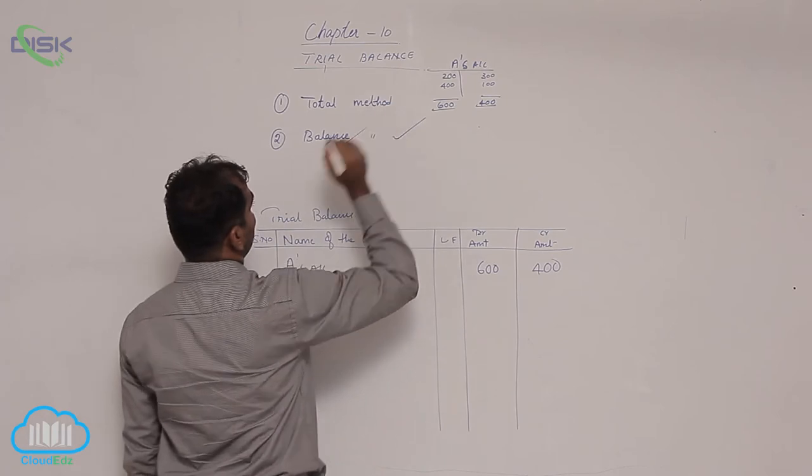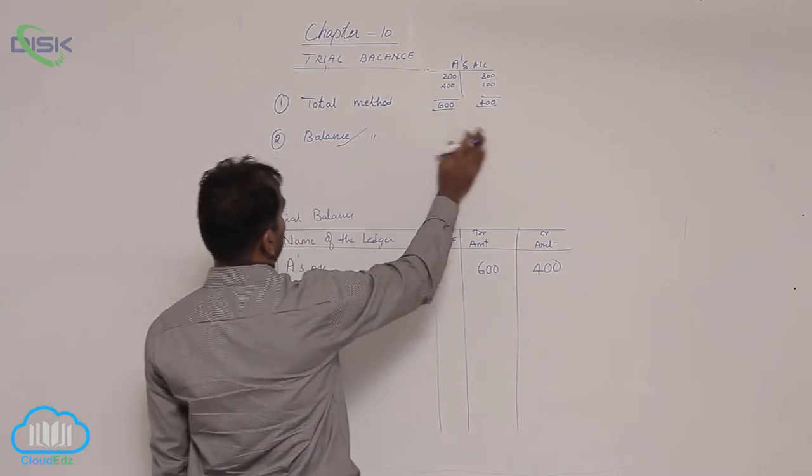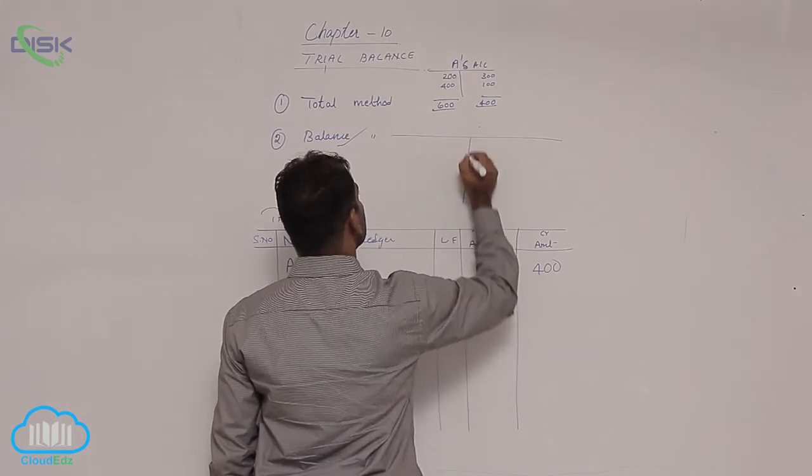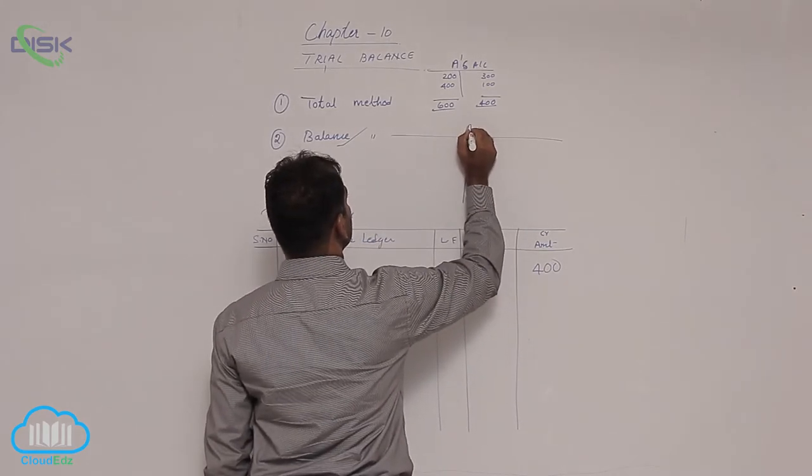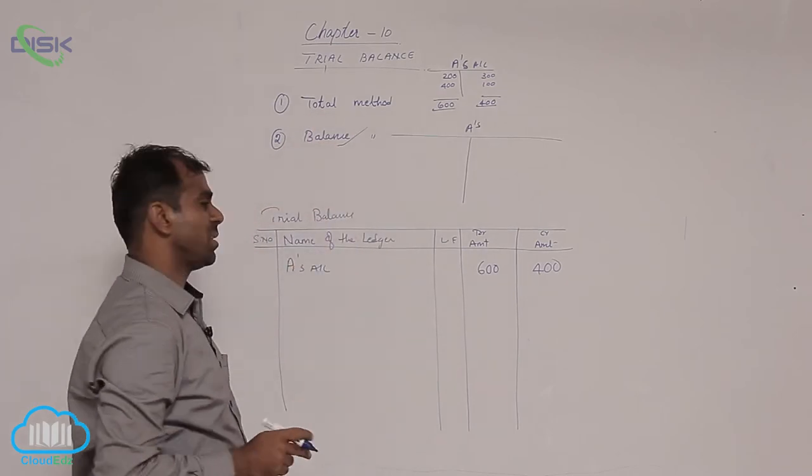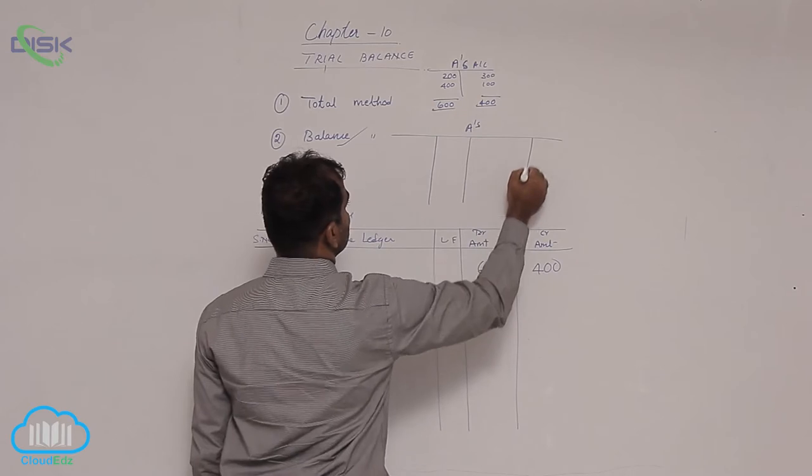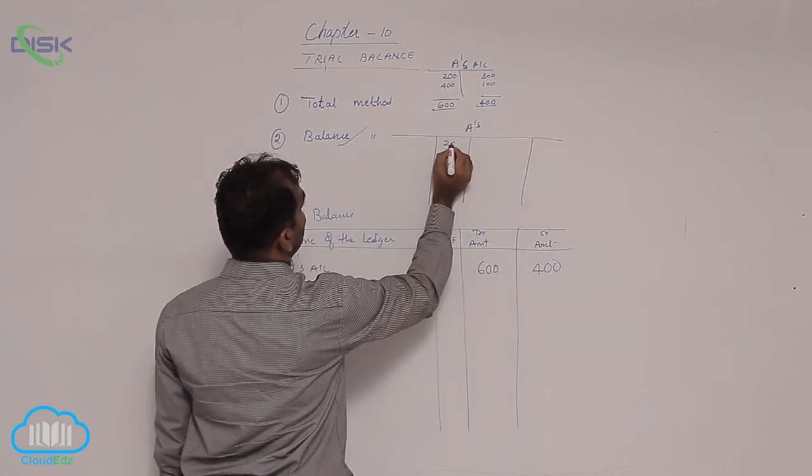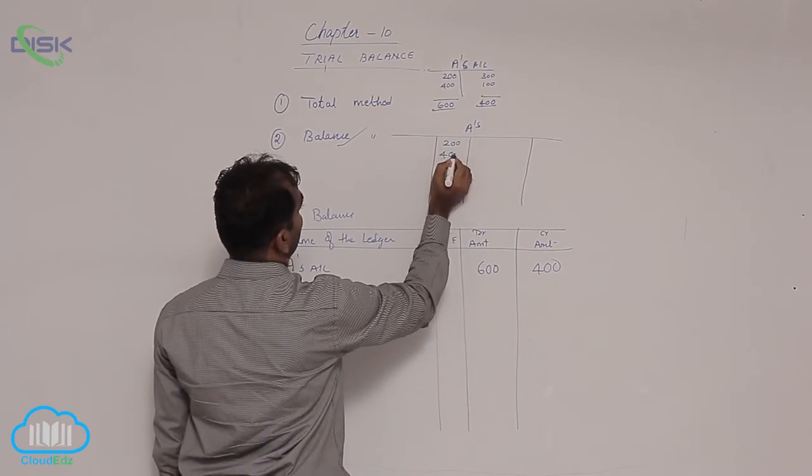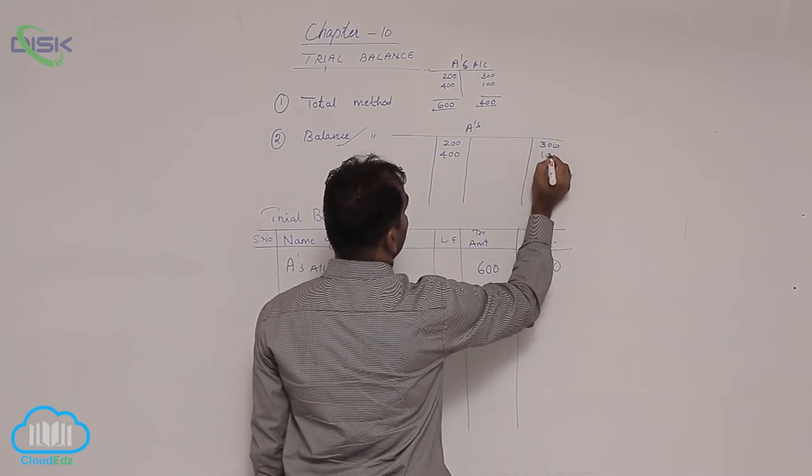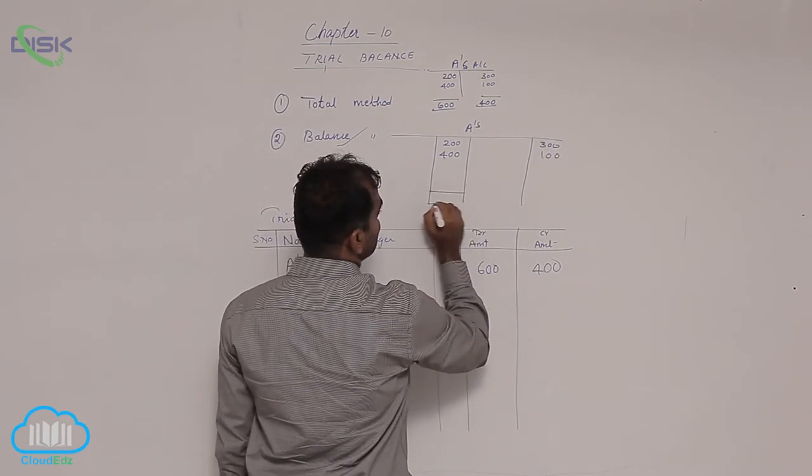Usually in practical life, you will find the balance method. What is balance method? It is something you already know, because you have done your ledger account. Suppose I am taking the same A's account. When I take the same A's account, we have 200 on debit, 400 on debit. On credit, we have 300, 100.